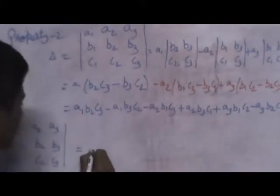this delta with elements A1 A2 A3, B1 B2 B3, C1 C2 C3 is equal to minus of this. If you interchange any rows or column, I will interchange the first row and second row.